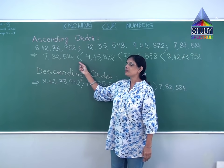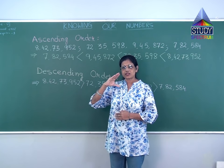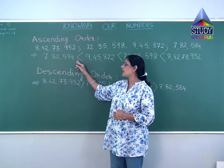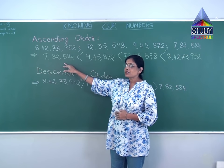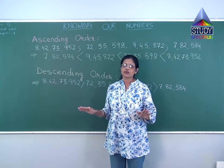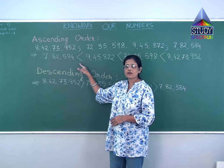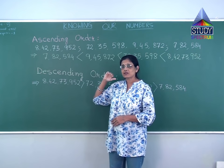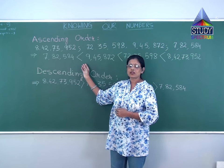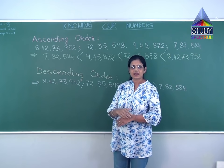When writing the signs while arranging, keep in mind this symbol is like the mouth of a fish. The opening part of the mouth faces the bigger number and the closing part faces the smaller number. If you write the numbers properly but put the sign in the opposite way, it is fully wrong. The opening place is the bigger number, the closing part is the smaller number. This is how you write in ascending order.